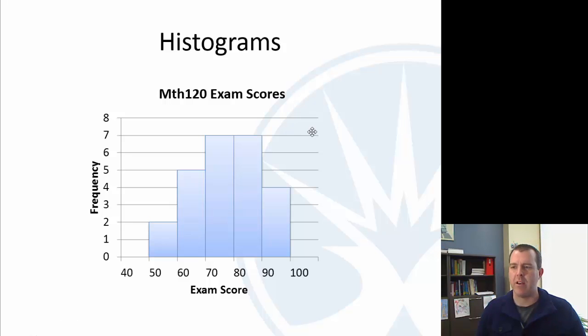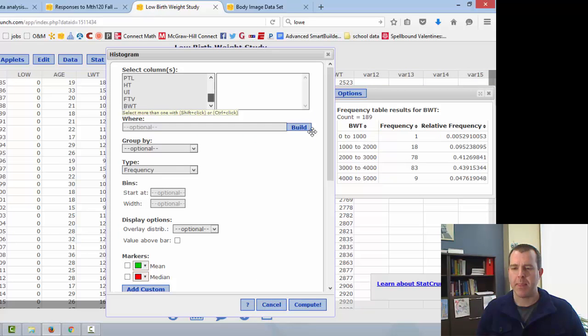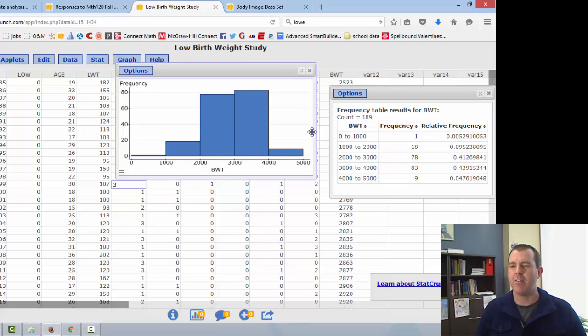Just out of curiosity, let's see how StatCrunch does it. Let's do graph, histogram, and we'll do birth weights. It'll probably do the zero automatically, but let's start with the zero and a width of 1,000, and compute. And so you can see it's labeling the lower class limit, very similar to what the birth weight did over here. So one thing you can do here, if you're interested, is you can get the same information from the table. If you highlight over a particular bar, it tells you the frequency for that particular range. You'll notice there's a bracket on 2,000 and a parenthesis on 3,000. That's actually interval notation. So the 2,000 is included, but the 3,000 is not.